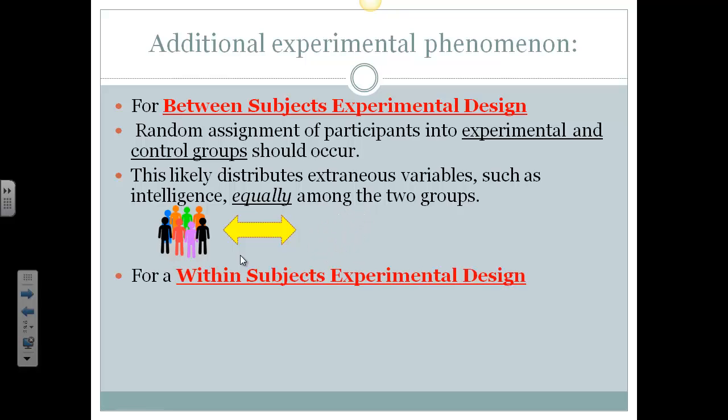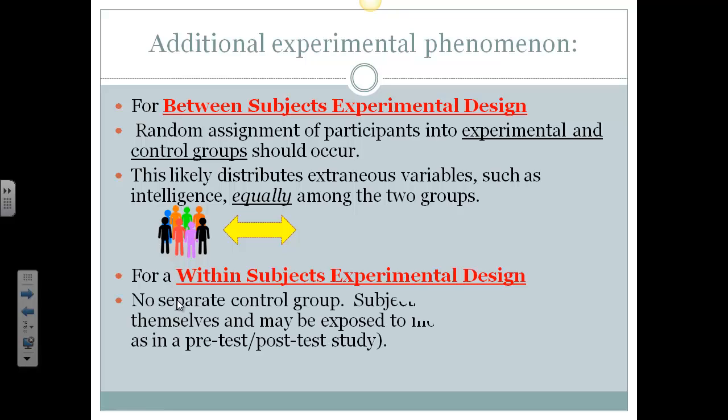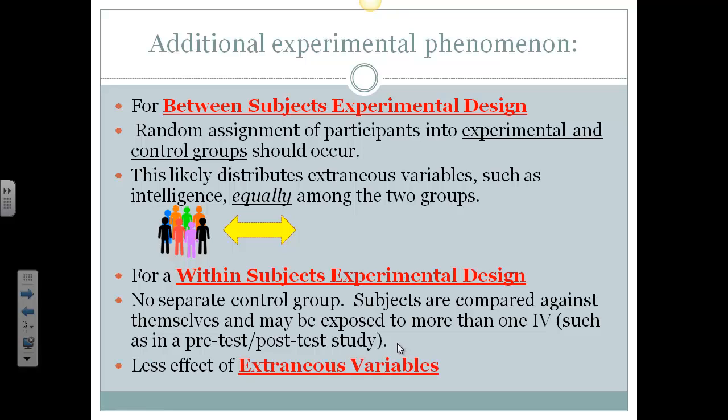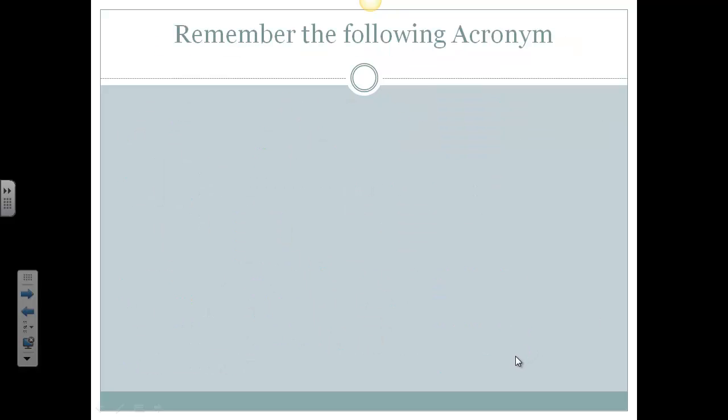Now that's not the only design we can do. We can also do a within-subjects experimental design. That's where our subjects are not different people in the experimental control group. There is no separate control group. The subjects are compared against themselves, typically in a pre-test. How do you perform before you get a special treatment? And then you get the IV. So first semester you don't use Cornell notes, second semester you do use Cornell notes, and we compare your first semester grades with your second semester grades. And this is where extraneous variables are less likely to affect the results. So you actually compare the pre-test group to themselves later on. So those are a couple extra terms.